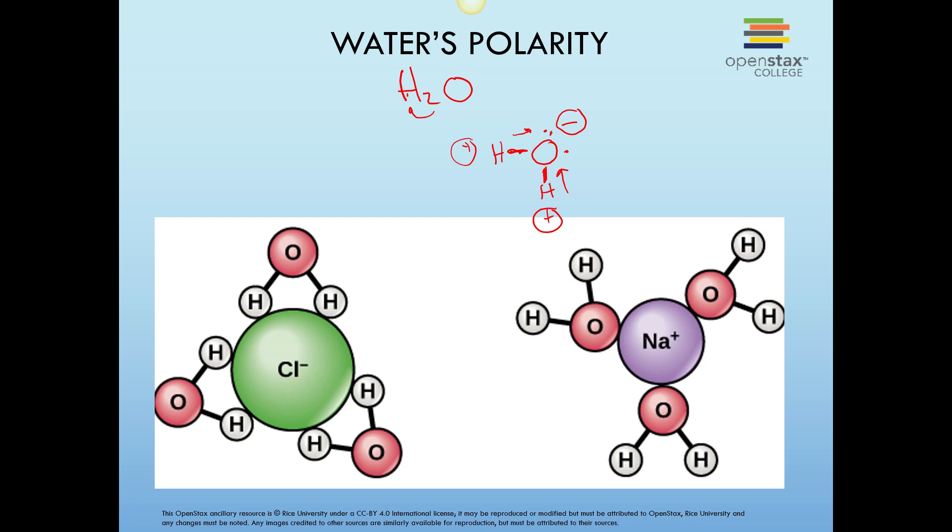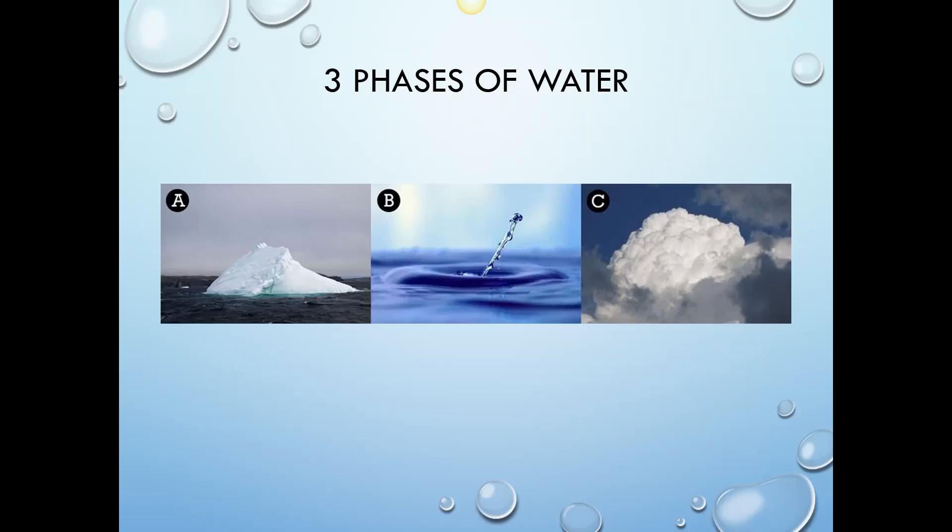The three phases of water: we have solid which is ice, liquid which is water, and gas which is steam. One major thing you'll notice about water that's different from other molecules is that water in its solid phase is less dense than water in its liquid phase. That's why ice floats and it's extremely important for ecosystems.